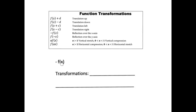Here we have all of our transformations, and for the first example, all I know is that a negative is multiplying my whole function. I know that a negative multiplying my whole function gives a reflection over the x-axis.